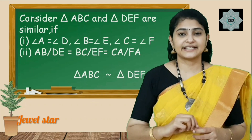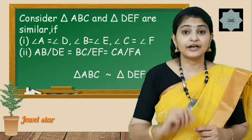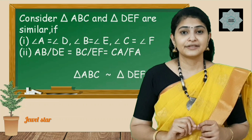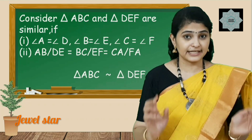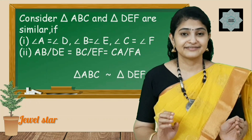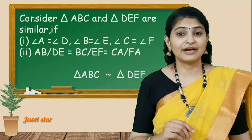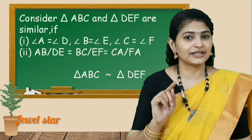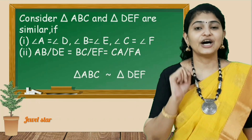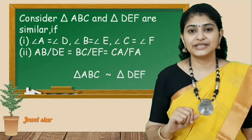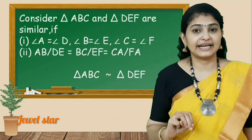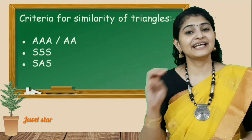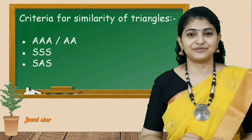For checking the similarity of triangles, do we have to check all six parts — all three angles and three sides? No, you don't have to check everything. There is a shortcut criteria. Now we will discuss three important criteria of similarity of triangles. Please look at this carefully.